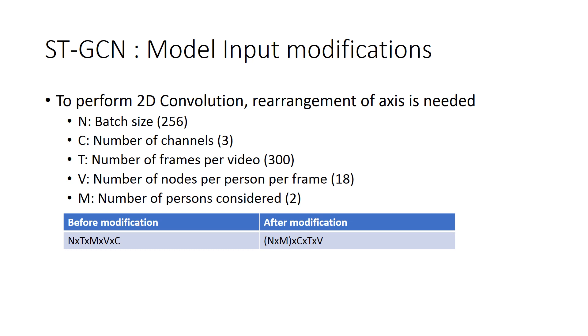For training, we are considering a batch size of 256 data for each 300 frames at a maximum of 2 persons per frame. We are going to modify the input dimension in such a way that it can be fed into a convolutional 2D network in a similar way to images.